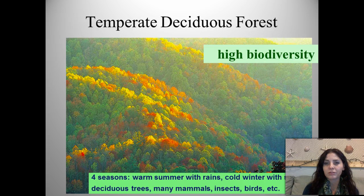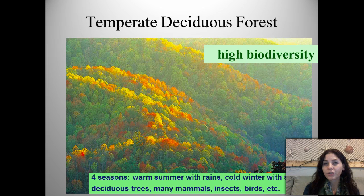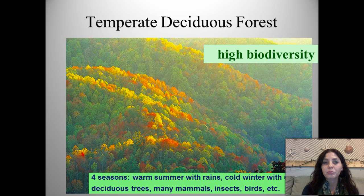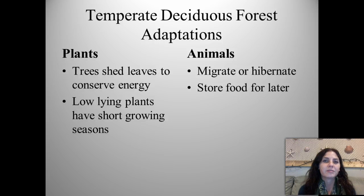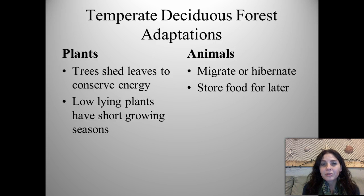The temperate deciduous forest has high biodiversity and four actual seasons — warm summers with rain and cold winters with snow. It has deciduous trees that shed their leaves, turning brilliant colors of orange, red, and yellow in fall due to specific hormones. It houses many mammals, insects, and birds. Plant adaptations include shedding leaves to conserve energy and low-lying plants with short growing seasons. Animal adaptations include migration, hibernation, and storing food for later — like chipmunks and squirrels hiding nuts.